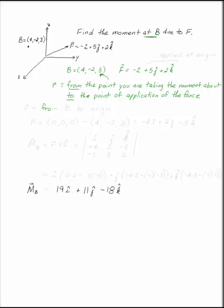So we're going from B to the point of application of the force. Where is this force applied? You can look at the drawing, and this is applied at the origin. That's where the tail of the vector sits. So if this is applied at the origin, then our vector R needs to go from B to the origin.